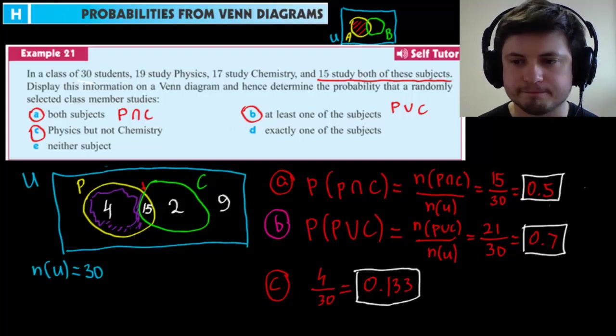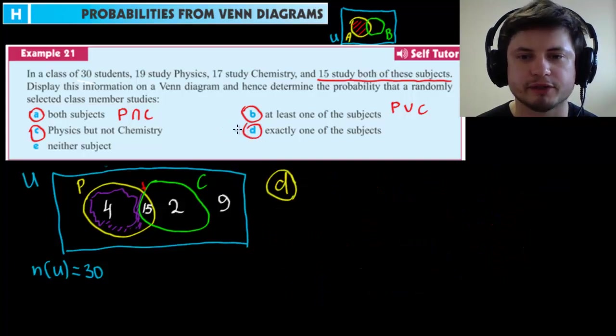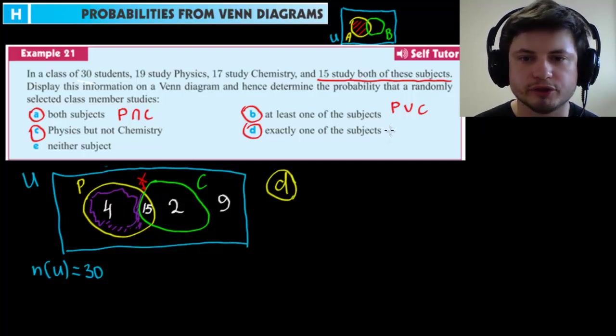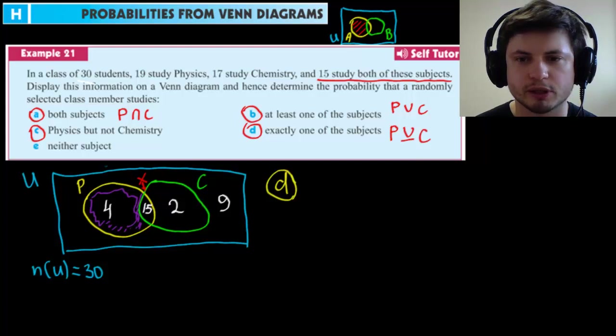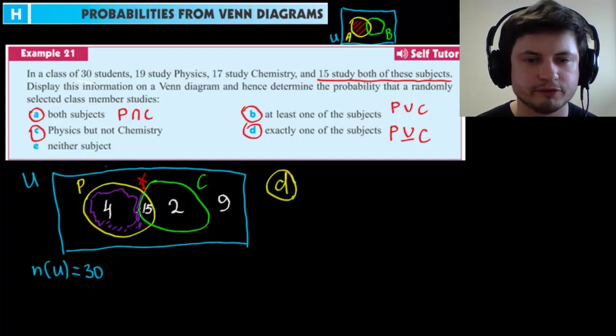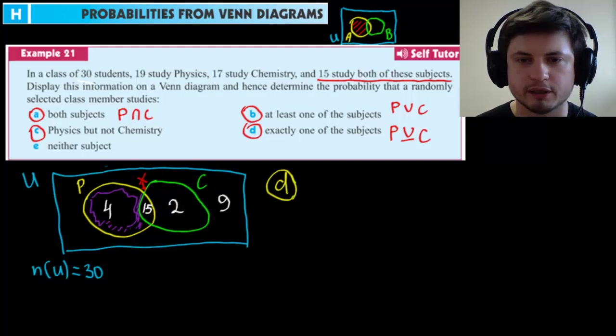So two questions left. Let's look at question D. And question D asks us to find exactly one of these subjects, exactly one of these subjects. What does this word mean? And it means so either P or C, but not both. So this is exactly what we were talking about before. This is an exclusive disjunction. So it's sort of this exactly, exactly one, but not two. From truth tables, this is the one where you had either one or the other, but not both. So let's take a look at this. So what are we looking at? We're looking at either four or two, but not 15. So four plus two then. So to answer this question, we're going to do what is the number of P or C, but not both divided by total universal set.